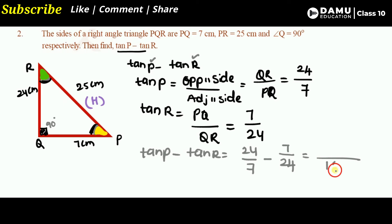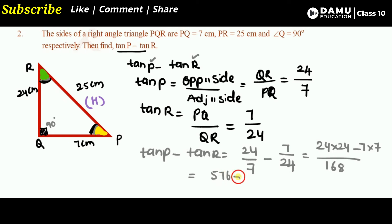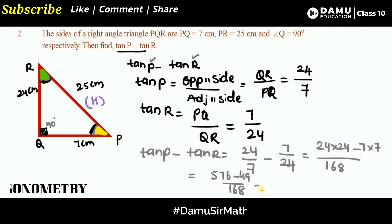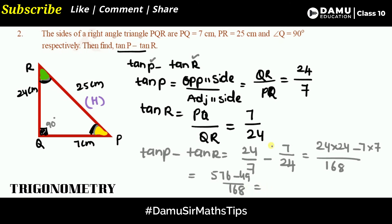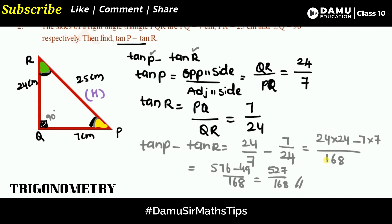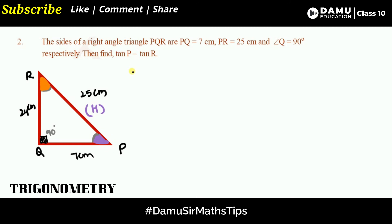Multiplying: 24 times 24 gives 576, and 7 times 7 gives 49. So we get 576 minus 49 all divided by 168, which equals 527 by 168. This is our answer from the direct method. Let's now check using the second method.